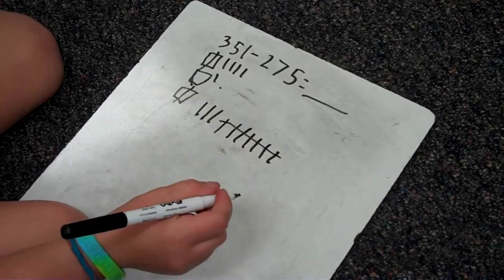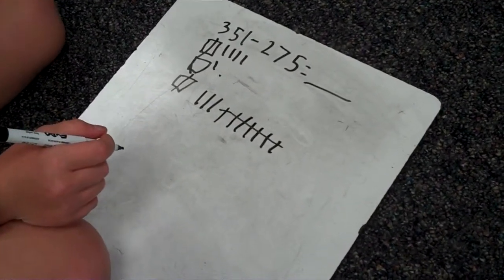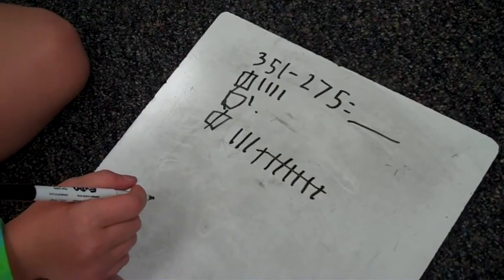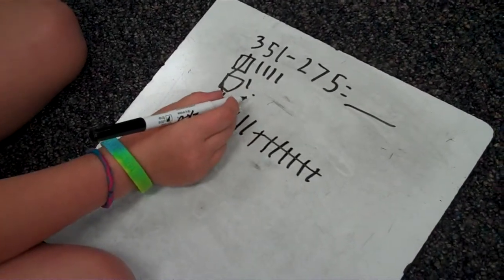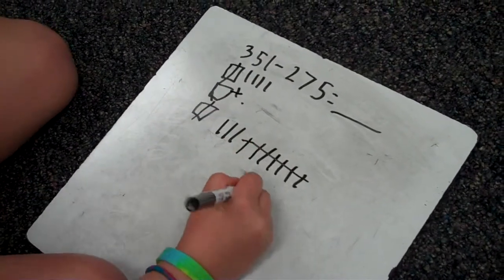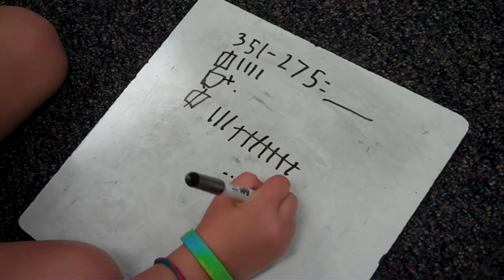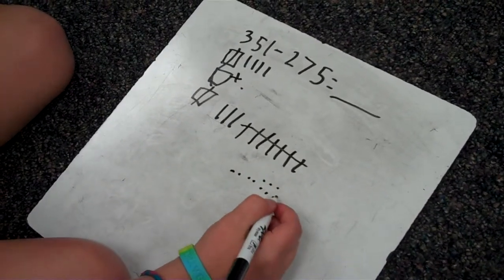Now, can you take the seven away? Yeah. So you have to take away five, but there's only one. So you take away one, and then you put one, two, three, four, five, six, seven, eight, nine, 10 there, and then you take away five.